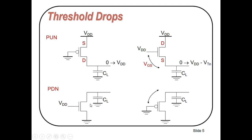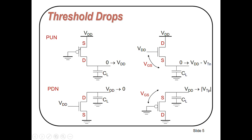Similarly, in the pull-down network we use NMOS transistors. When a high gate voltage is applied, the NMOS transistor turns on and discharges the output capacitor from VDD to 0. If a PMOS transistor were used instead, one threshold voltage would remain on the capacitor. PMOS transistors pass strong 1s and weak 0s, while NMOS transistors pass strong 0s and weak 1s — this is why PMOS is used in the pull-up network and NMOS in the pull-down network.